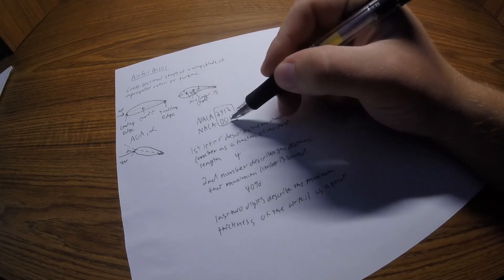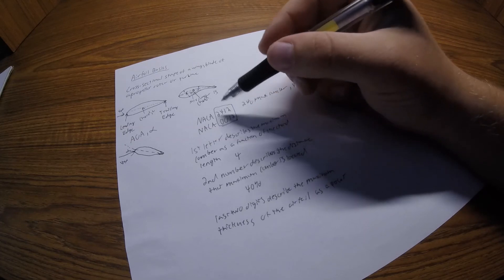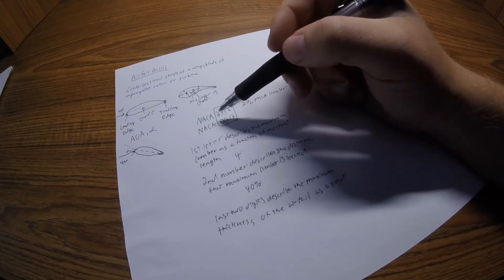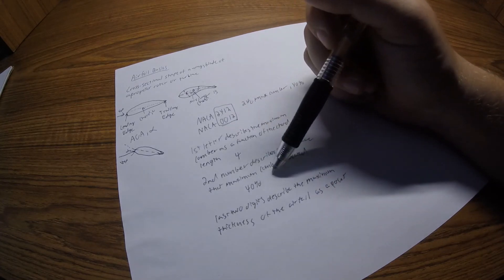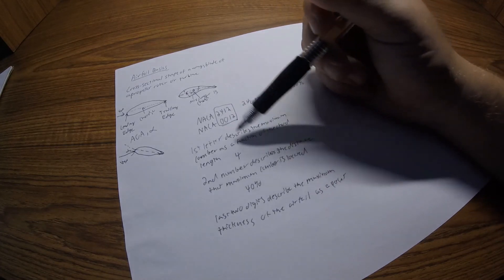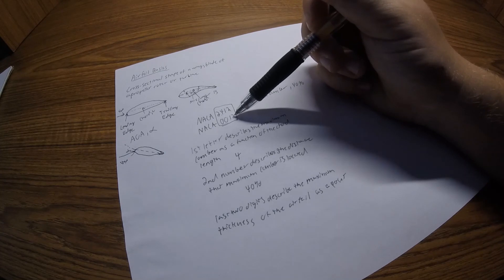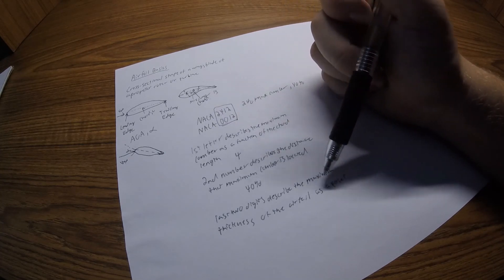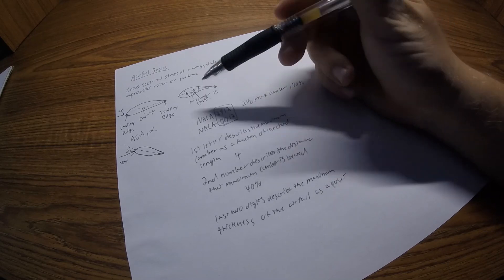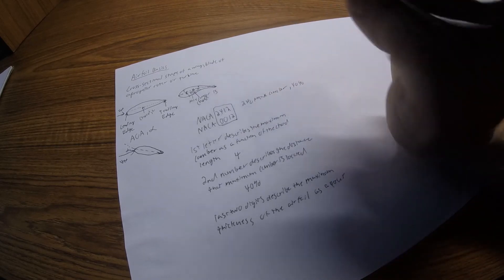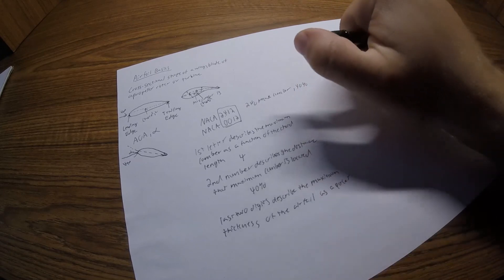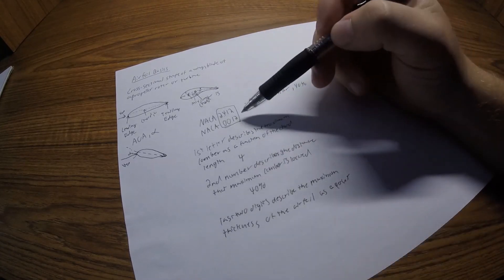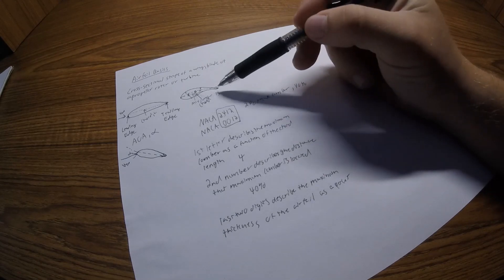Now the NACA 0012, the zeros mean the first zero says there's no camber, so there can't be a location of that camber along the wing. So it's just zero zero, then 12 still says the maximum thickness is 12 percent of the chord line. It doesn't really tell you the location, but it says the maximum thickness of that airfoil is 12 percent of the chord line.